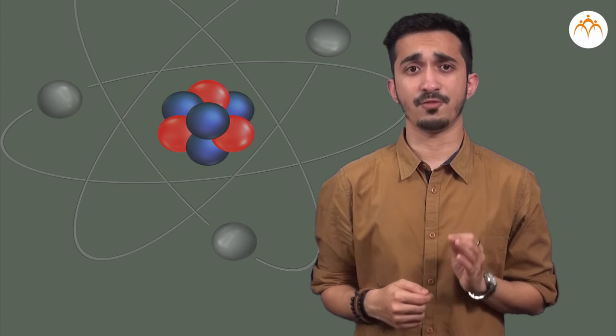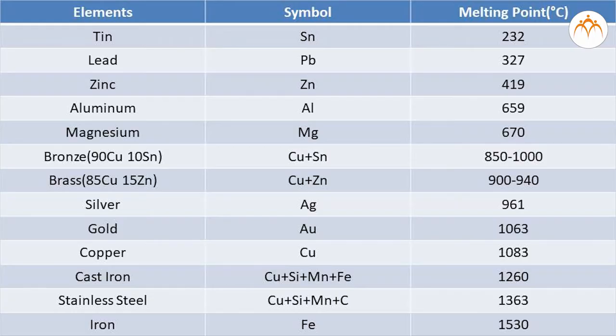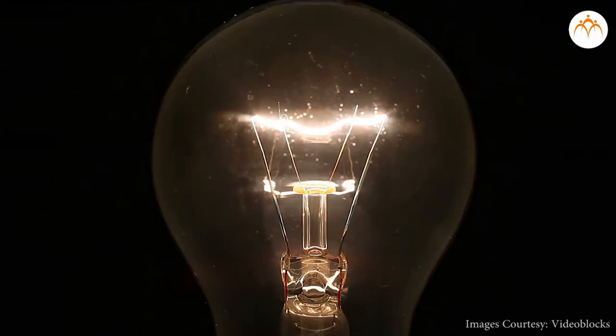Eighth, density. Metals have a high density and are very heavy. Melting and boiling points. Metals have high melting and high boiling points. For example, tungsten has the highest melting point, 3,422 degrees Celsius. Whereas sodium, potassium, mercury, gallium have low melting points.